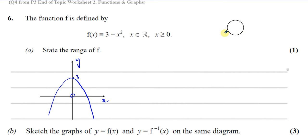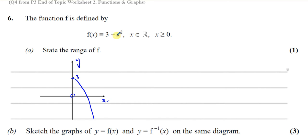Before going further, since x ≥ 0, we have to take into account that we don't have the left part of this graph. In this case it doesn't really make a difference to the range, because the vertex — the maximum point — is reached when x = 0, giving a value of three.